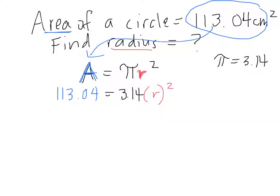What do you think you need to do? We're trying to isolate our variable. We're trying to figure out what r equals. That's our goal. This is just isolating variables, which we've done before.